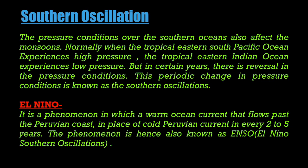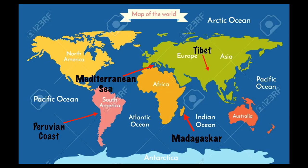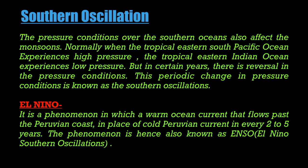There is a phenomenon called Southern Oscillation, which impacts the monsoon significantly, occurring every 2 to 5 years. The Peruvian coast on the west side of South America will be important for understanding this. Normally, when the tropical eastern South Pacific Ocean experiences high pressure and low temperature, the tropical eastern Indian Ocean experiences low pressure and high temperature. But in certain years there is a reversal in pressure conditions. This periodic change in pressure condition is known as Southern Oscillation.